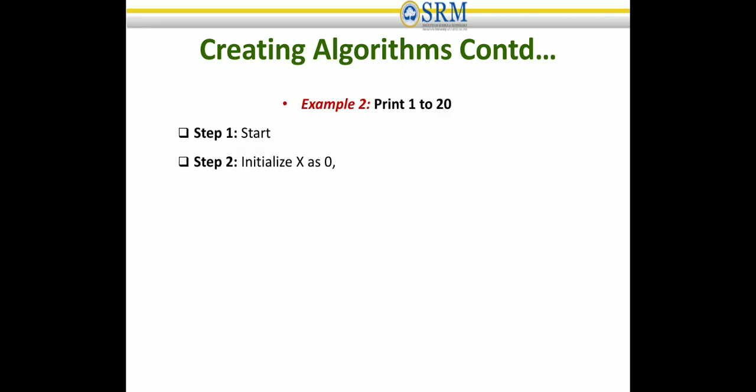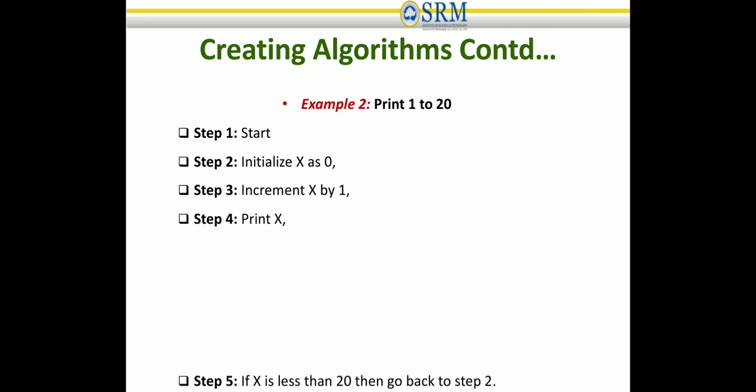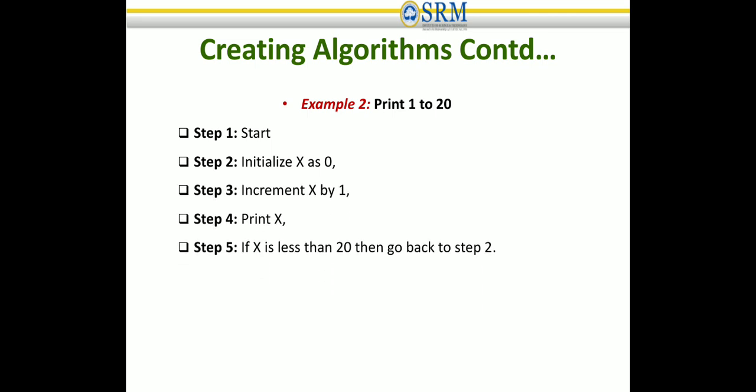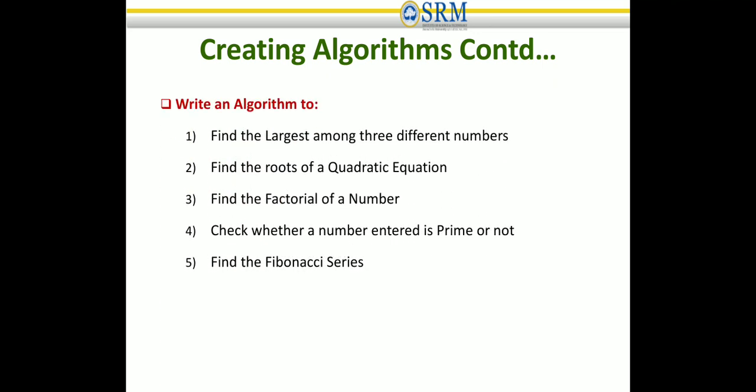Example 2: print 1 to 20. Step 1 is Start. Step 2: initialize x as 0, then increment x by 1. Print x until x reaches 20, repeating the process. If x is greater than 20, halt. This prints all numbers from 1 to 20. These are the listed examples to work on. Thank you, see you in the next lecture.